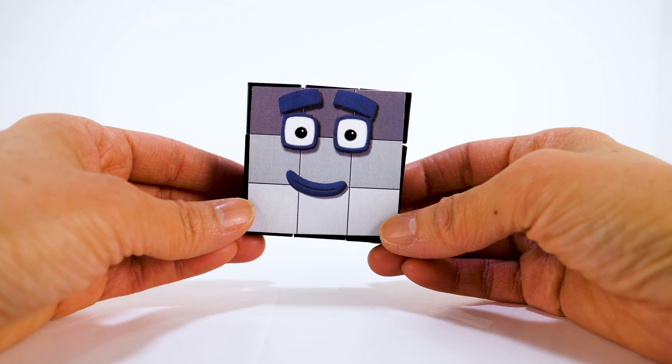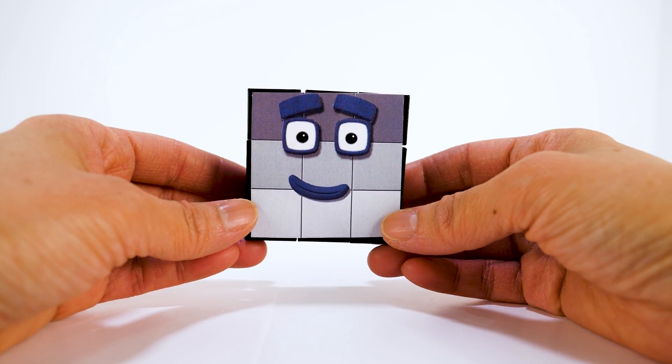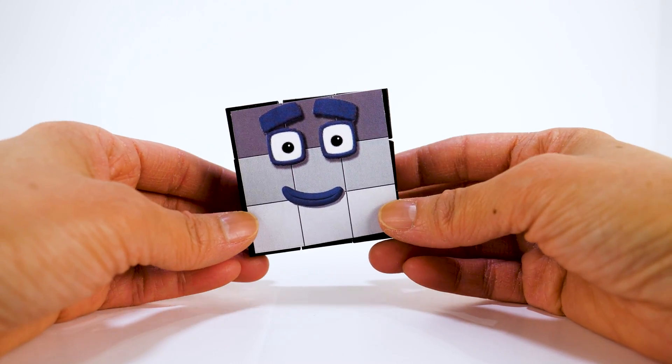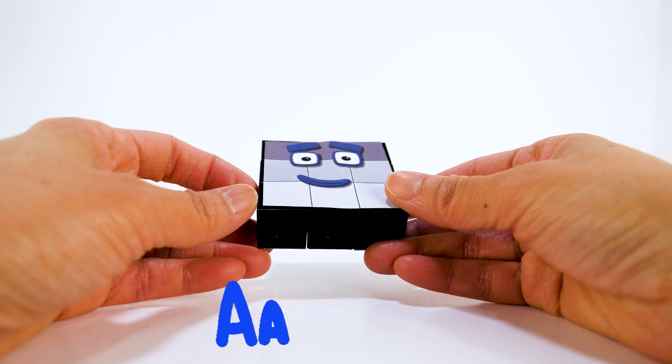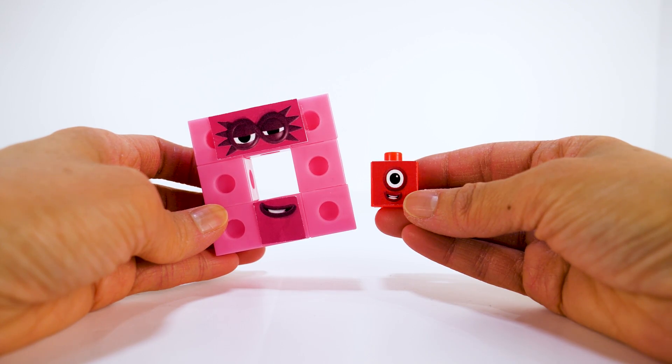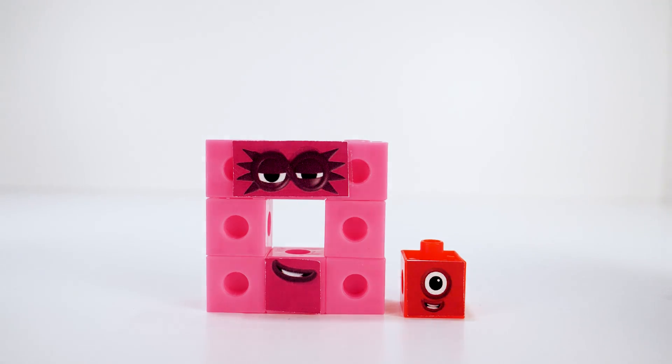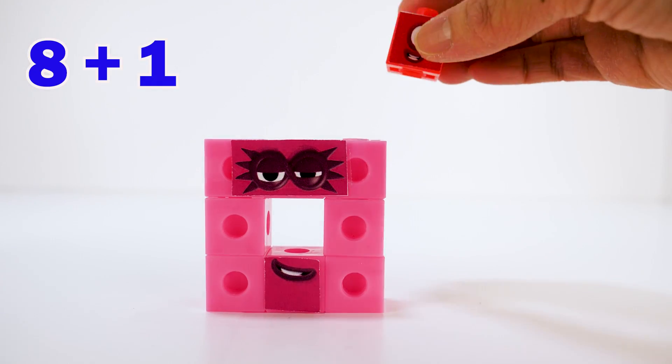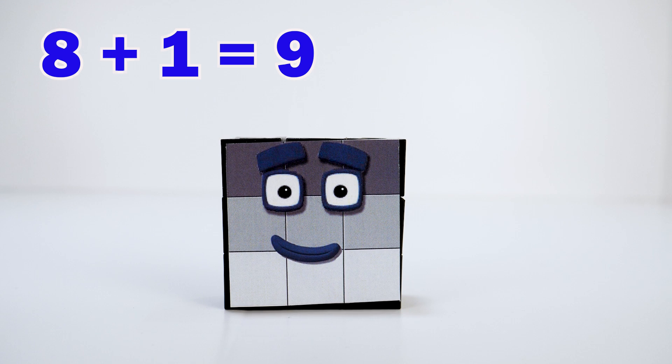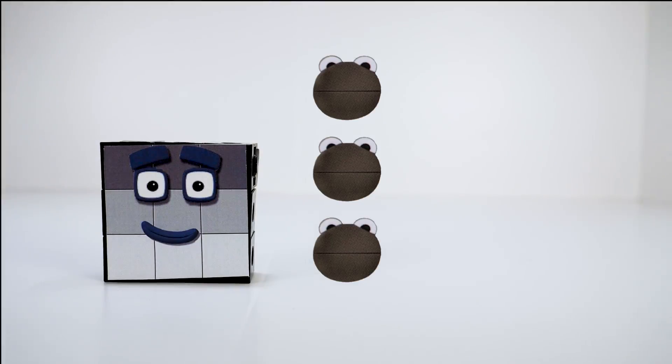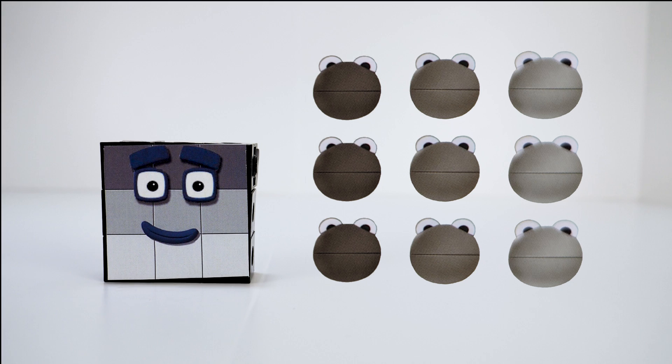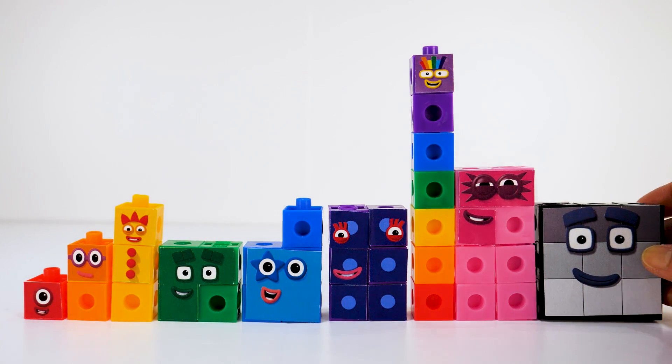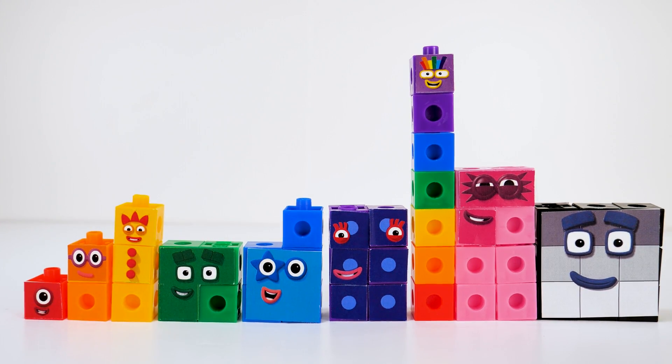Number block 9 likes to be a square. 9 often gets a tickly nose and if he doesn't get a handkerchief just in time, his middle block shoots out in a giant sneeze and becomes 8 and 1. Ah-choo! Uh-oh! 9 becomes 8 and 1. Let's put 8 and 1 together. And it's 9 again. 1, 2, 3, 4, 5, 6, 7, 8, 9. 3 rows of 3. That's number block 9.